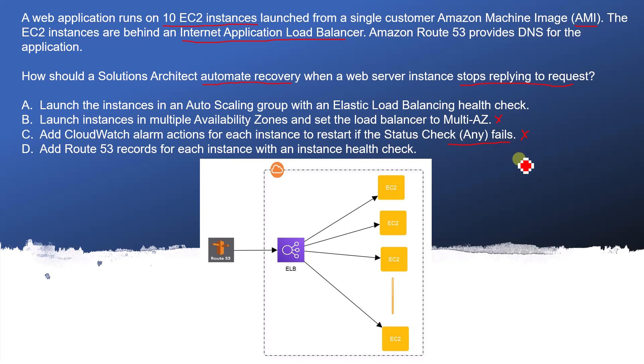Option D: Add a Route 53 record for each instance with an instance health check. That is the wrong answer because if a health check goes down, Route 53 cannot reboot the instance — it does not have the ability to do automated recovery. The correct option is A, but let's dive into more detail on the pros and cons of ELBs, CloudWatch alarms, and auto scaling capabilities and limitations.